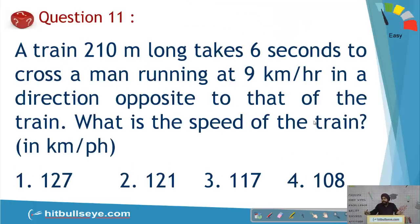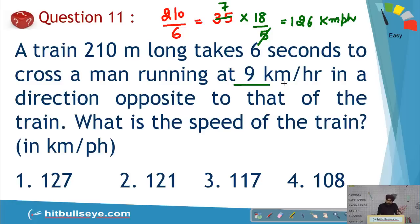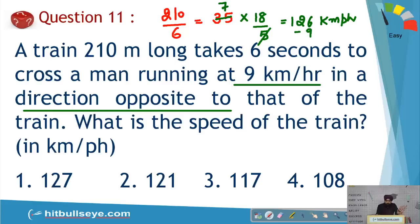Time, speed, and distance: a 210-meter long train passes in 6 seconds, so relative speed = 210/6 = 35 m/s = 35 × 18/5 = 126 km/h. A man is running at 9 km/h in the opposite direction, so speeds were added to give 126. Therefore train's speed = 126 − 9 = 117 km/h.